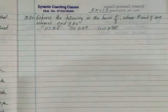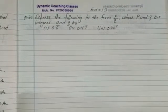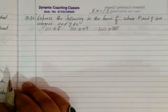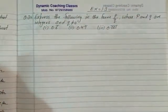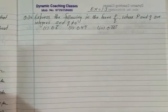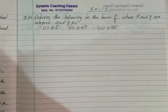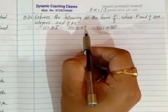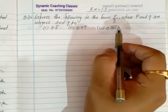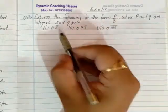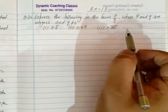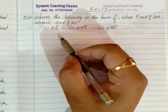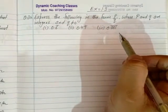Hello everyone. Look at question number 3 of exercise 1.3. The question says: express the following in the form p by q, where p and q are integers and q is not equal to 0. You have to represent some numbers like 0.6 bar, 0.47 bar, and 0.001 bar in the form of p by q.